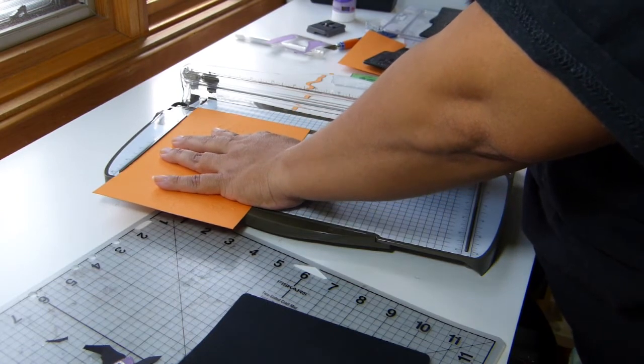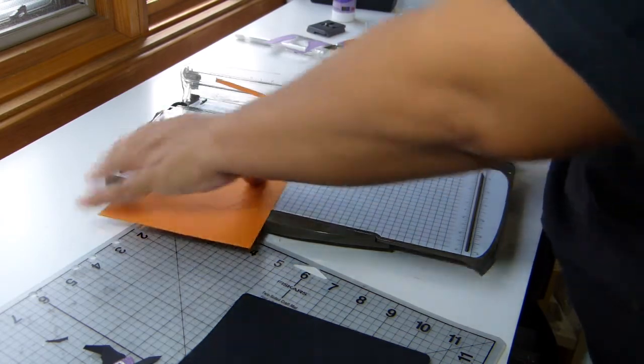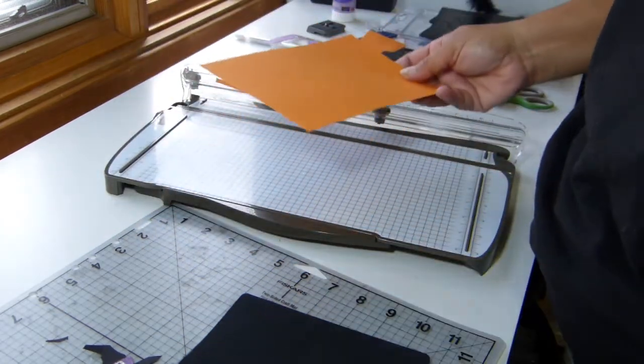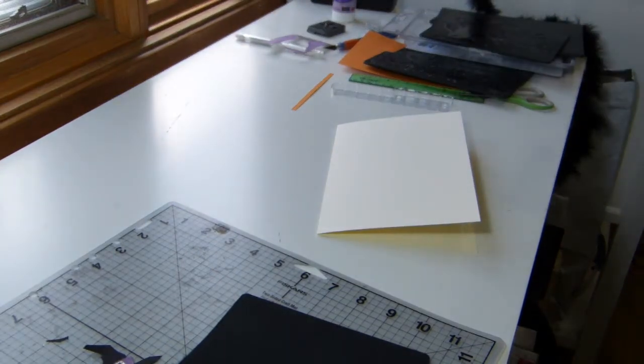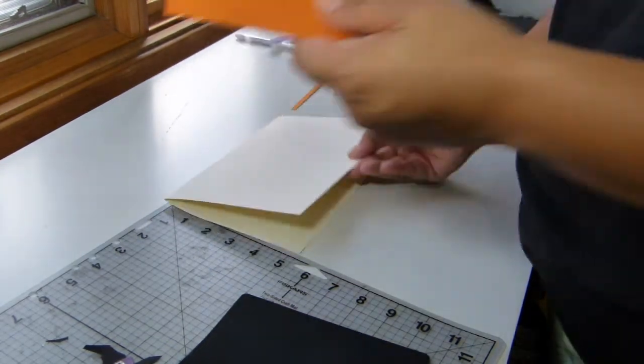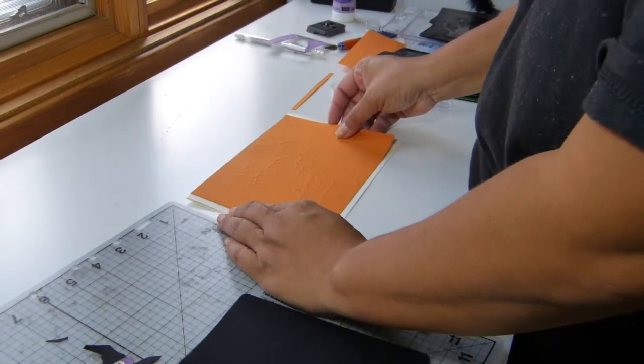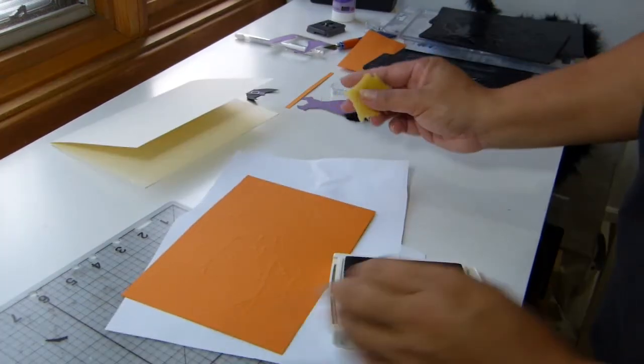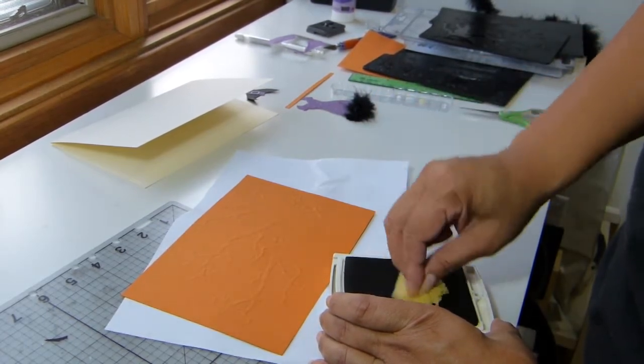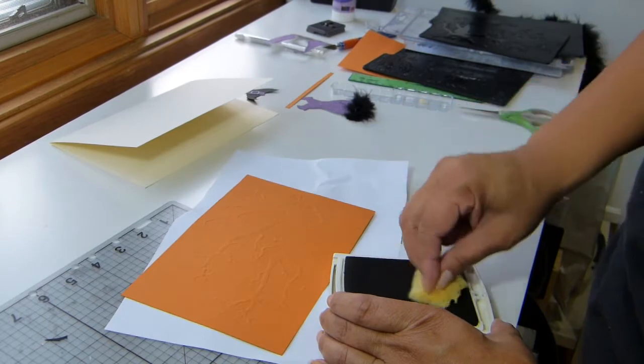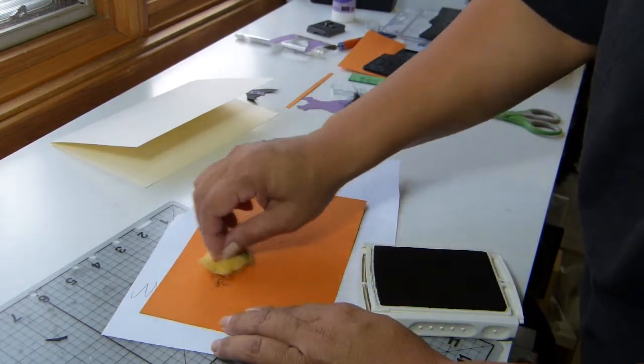Oh, in case you want to know, I'm doing pumpkin pie for the background. And I think what I'm going to do is sponge the tree so it kind of stands out. I'm using the Soft Suede ink.